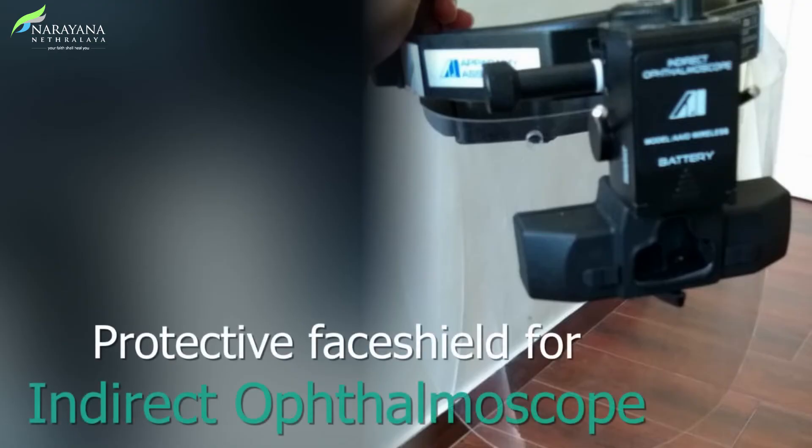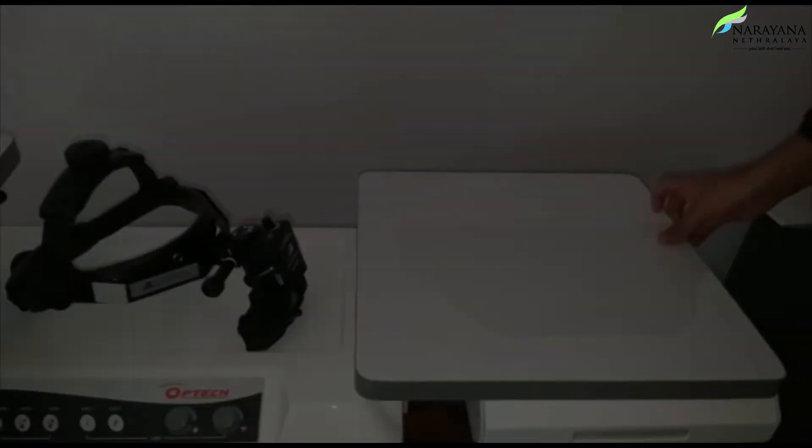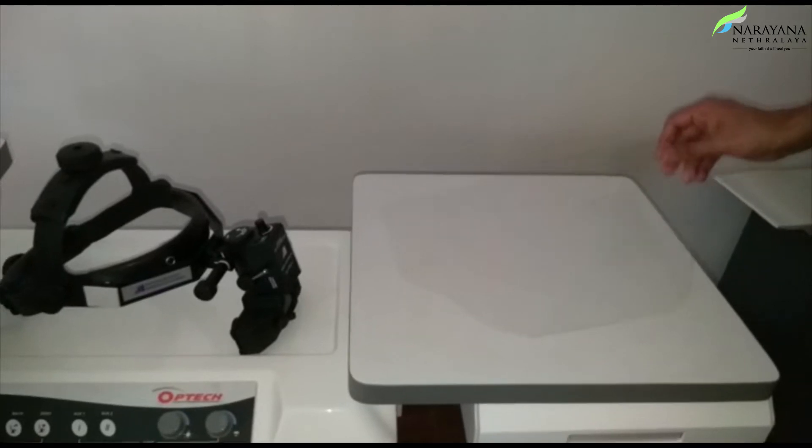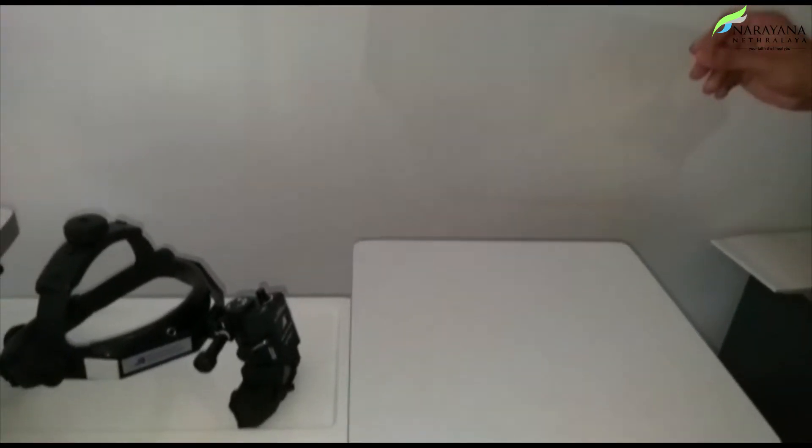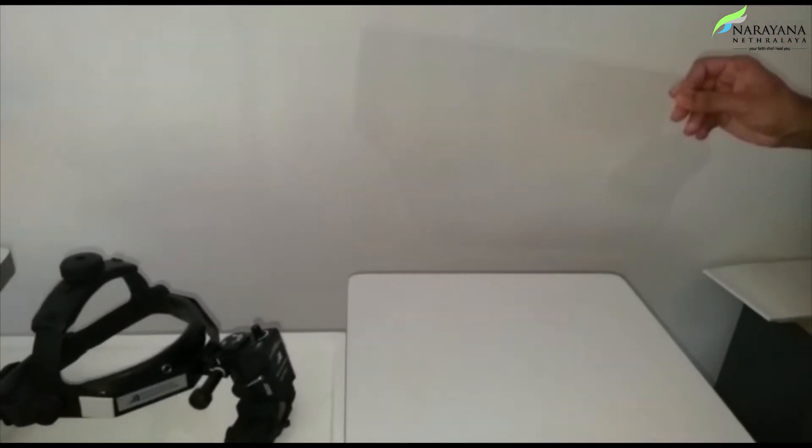Here's a short video to demonstrate how a face shield can be made for IDO examination. Materials required include a transparent sheet like an OHP sheet or file sheet and double-sided adhesive foam.